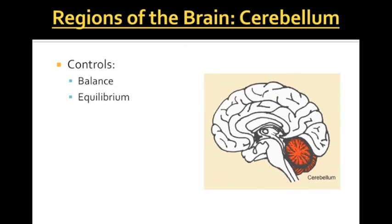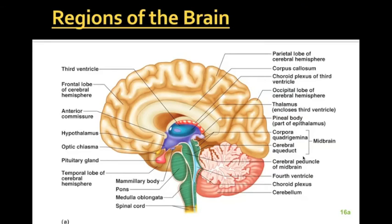The last region of the brain is the cerebellum, whose basic roles are balance and equilibrium. A part of our inner ear, which we'll discuss in the next chapter, will send messages about head tilt, spinning, and other balance information, and that information is interpreted within the cerebellum.